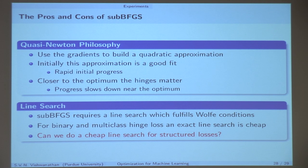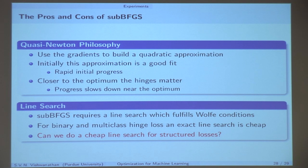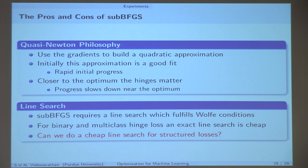Structured losses have exponentially many hinges — for instance, a linear chain CRF is a structured loss. I can perform inference on a linear chain CRF in linear time, but if you ask what happens to the result of Viterbi when you perturb the parameter slightly in a certain direction, that is a hard problem. There is a paper by Pachter and Sturmfels using advanced algebraic geometry concepts, but a full solution is something you could spend several years on.